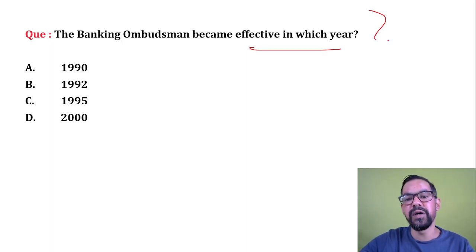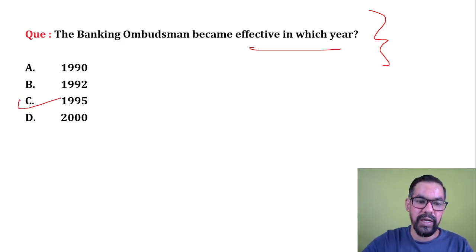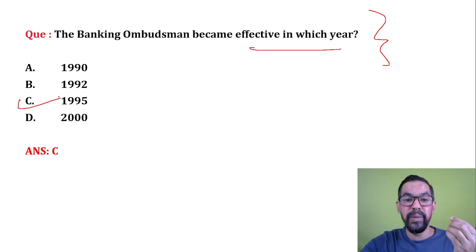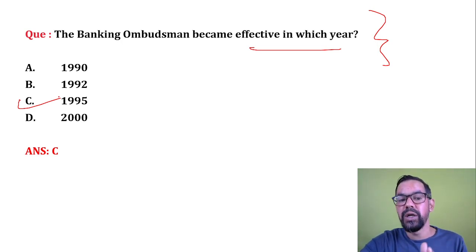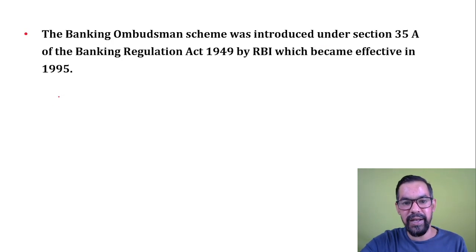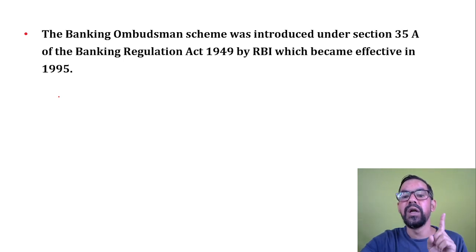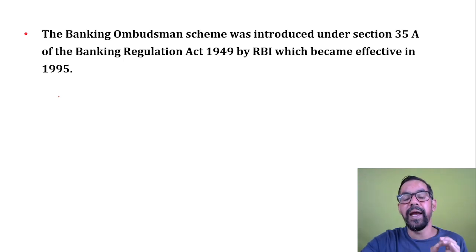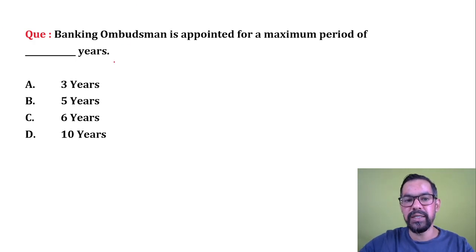Next question: The Ombudsman became effective in which year? It was first introduced in 1995 when RBI made amendments to Section 35A. The first scheme was Banking Ombudsman Scheme 2006, so the scheme was passed in 2006, but the ombudsman concept was first introduced in 1995 under Section 35A of Banking Regulation Act 1949.